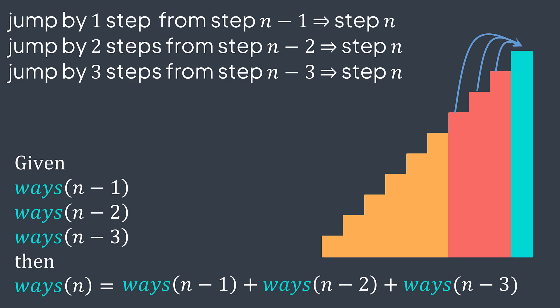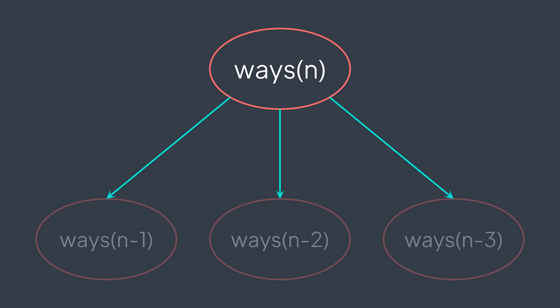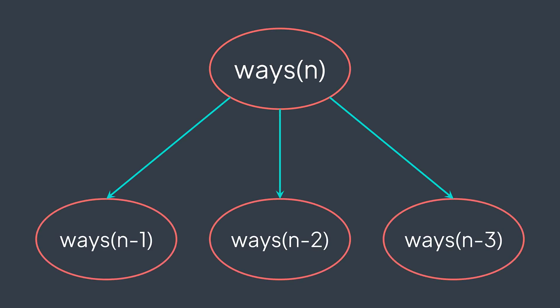Here we did something very important to understand: we divided the problem into subproblems. To solve the initial problem — which was to count the ways to reach step n — we solved smaller instances of the same problem. The problem is still the same: count the ways to climb a certain number of steps, but smaller because the input is smaller.